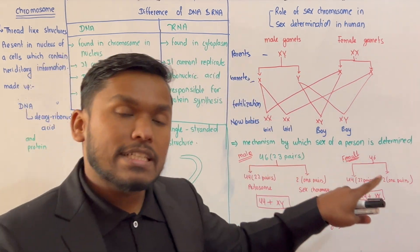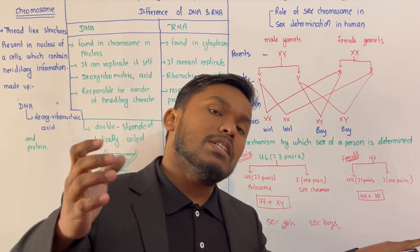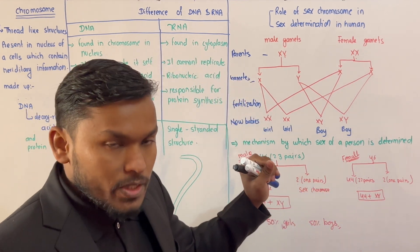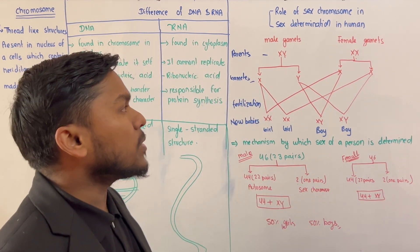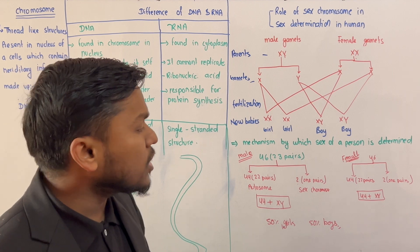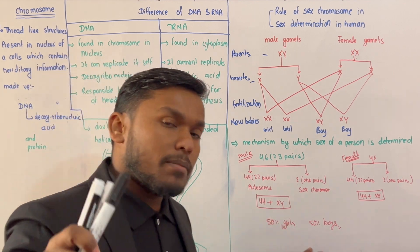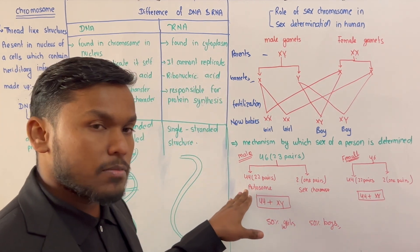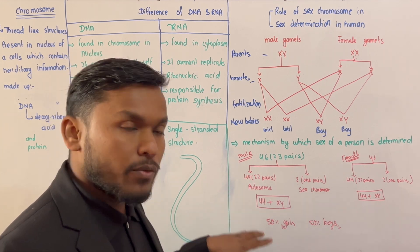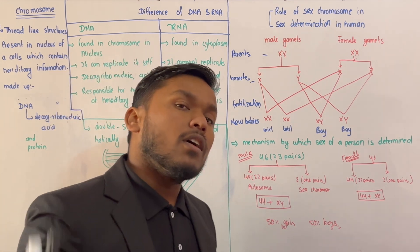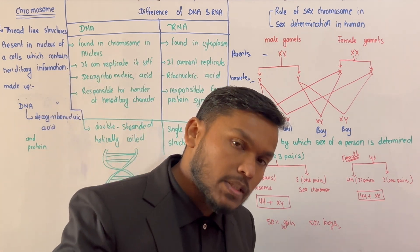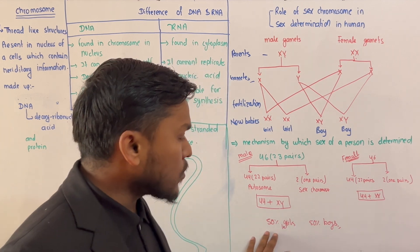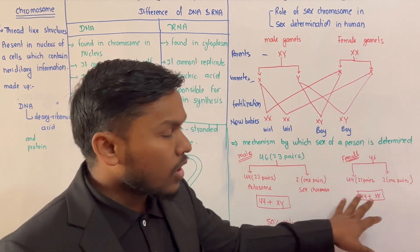The mechanism by which sex of a person is determined is known as sex determination. The male has 44 autosomes plus XY sex chromosomes, and the female has 44 autosomes plus XX sex chromosomes.